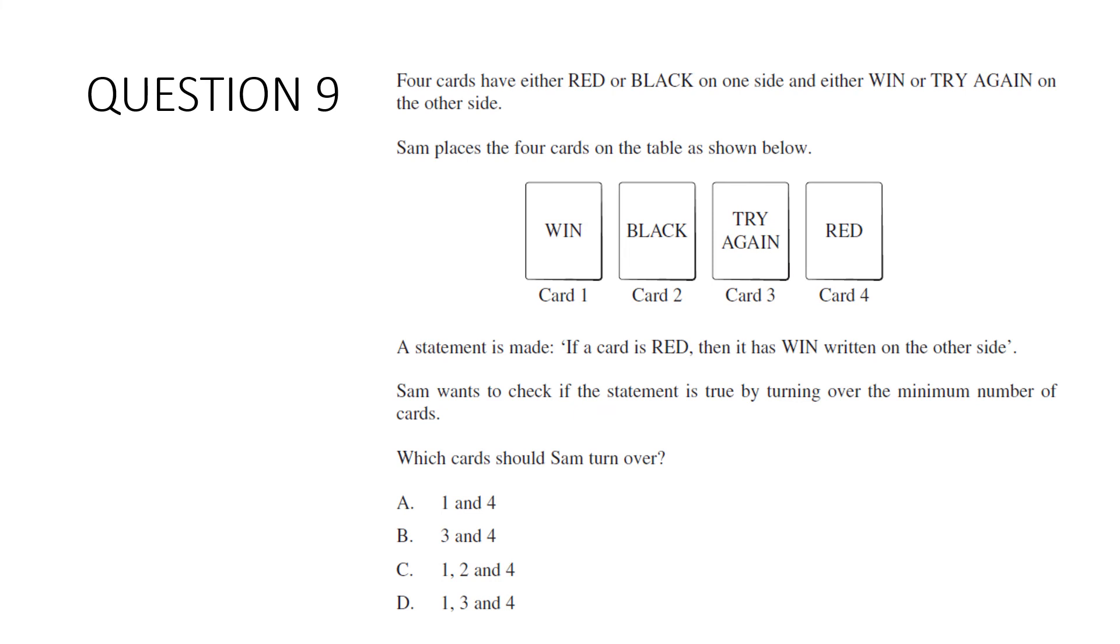Question 9. Four cards have either red or black on one side and either win or try again on the other side. Sam places the four cards on the table as shown below. Win, black, try again, red. A statement is made. If a card is red, then it has win written on the other side. Sam wants to check if the statement is true by turning over the minimum number of cards. Which cards should Sam turn over? Well, obviously, we want to turn over card four because we need to check that this one has got win on the back. But that doesn't eliminate anything. So that's a bit sad, isn't it? We also want to turn over card three because if this one's got red on the back, then our statement would be false. Now, is that sufficient? So turning over four and three. So it could be B or D. Do we also need to turn over card one? If we turn this over and it has red on the back, great. But if we turn it over and it has black on the back, that's also alright. Because it doesn't say that a card that has black on the front can't have win written on the back as well. So our answer here is B.